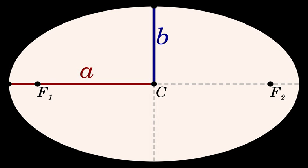The semi-major axis is the mean value of the maximum and minimum distances r_max and r_min of the ellipse from a focus — that is, of the distances from a focus to the endpoints of the major axis. In astronomy these extreme points are called absides: a = (r_max + r_min) / 2.